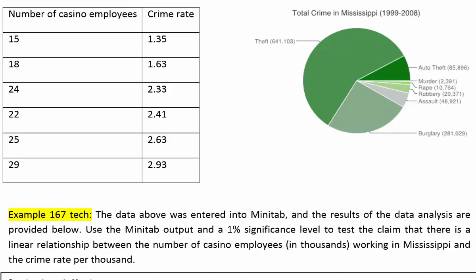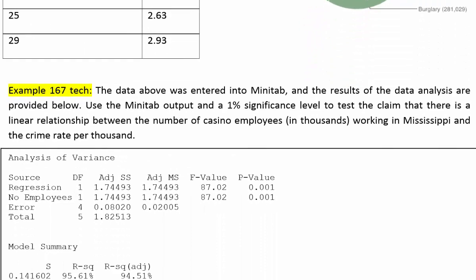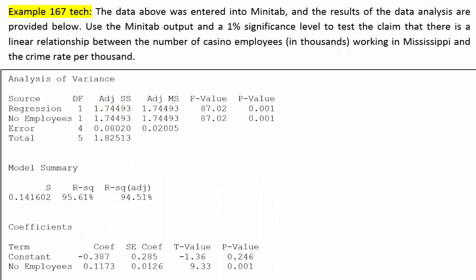Let's take a look at this computer output. The first thing we can see here is that they provided the p-value for the overall model, and that p-value seems to be significant because it's less than 1%. If we look further down here underneath where it says coefficients, we can see that the term number of employees, which is our x variable — the variable attached to the slope — has a significant coefficient.